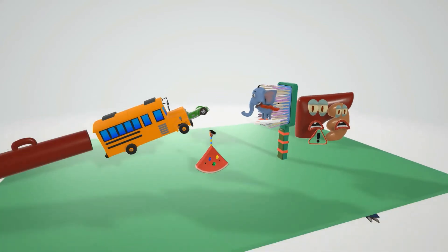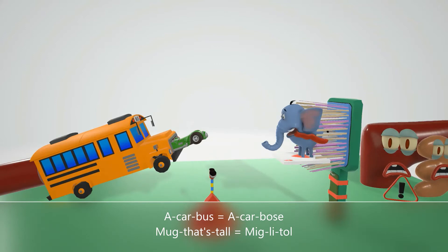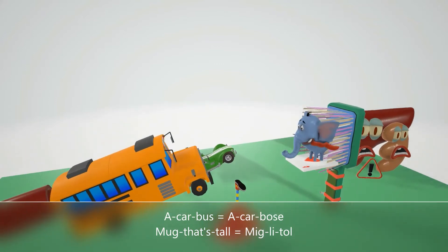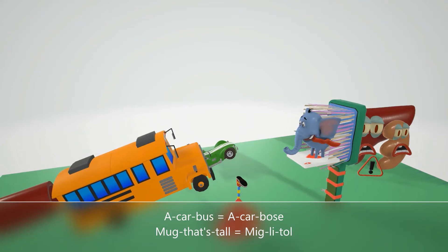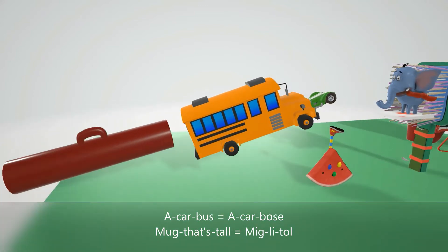So what are the alpha glucosidase inhibitors? Well, that's represented by what's going on over here. We see this bus over here. Well, it's not any random bus. It's a car bus. There's a car coming out of the front of the bus. The car bus for acarbose. Acarbose is an alpha glucosidase inhibitor. As well, we see the mug over here. This is a very tall mug. The mug that's tall for miglitol. Acarbose and miglitol are the alpha glucosidase inhibitors that we want to be aware of.